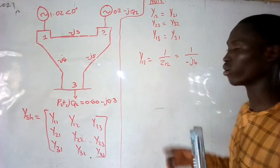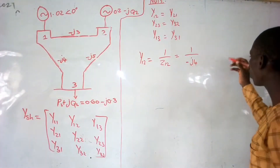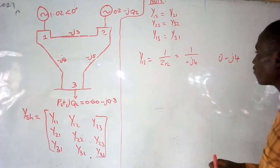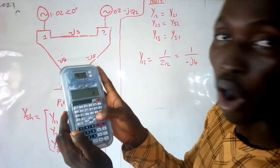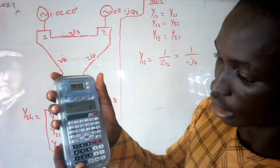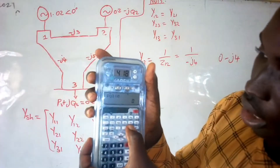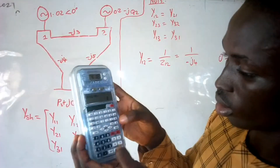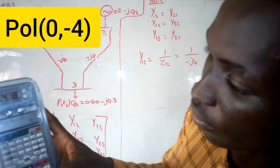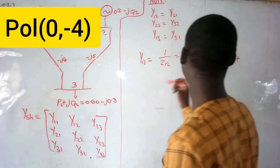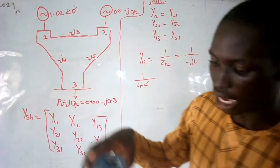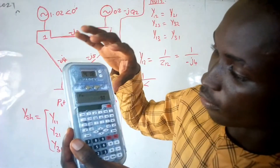Now we have minus J4. This minus J4 simply means the real part is 0 and we have minus J4. So how do I find this on my calculator? I press POL with brackets, then I put 0 — the real part is 0 — then comma, then minus 4. Close the bracket. So what do I have? 4. I write 1 over 4, and then RCL gives minus 90 degrees.